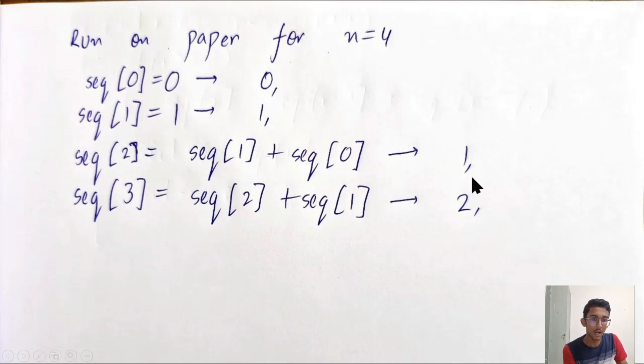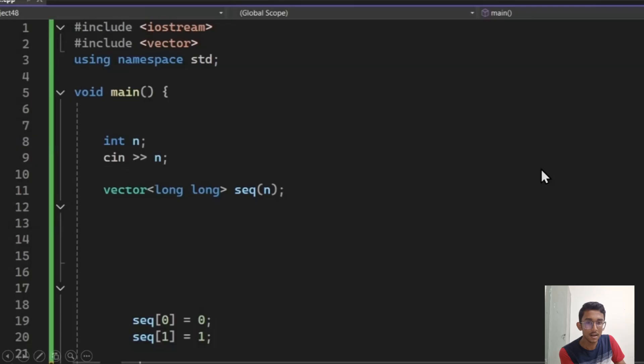And it will output that. And also sequence of 2 is stored now, so I can use that later. Then it will run for r equal to 3. Sequence of 3 is sequence of 2 plus sequence of 1, which is 1 plus 1, and it will output 2.